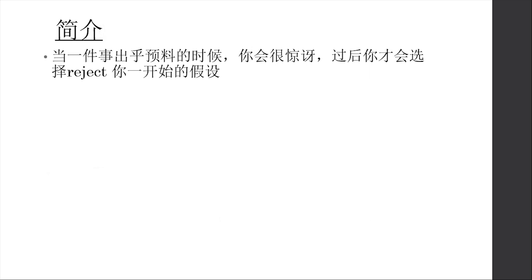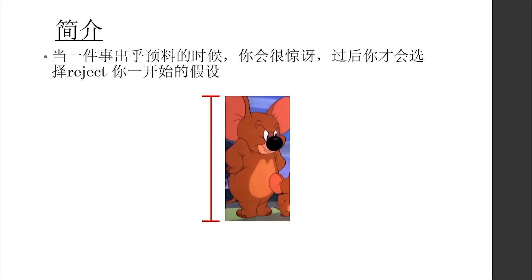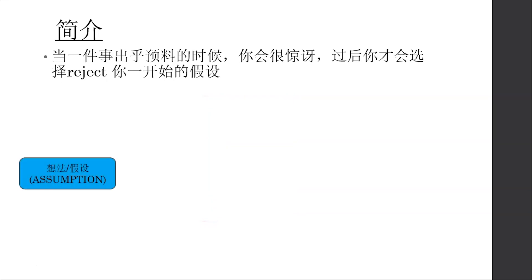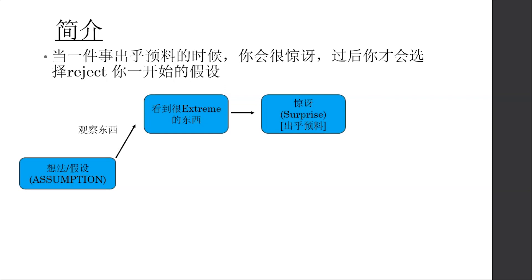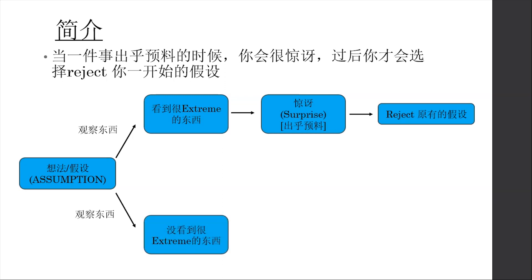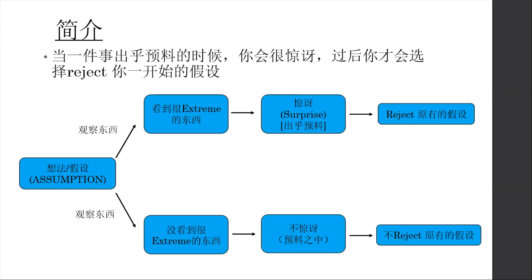We don't know what the truth is. Is the real size of mice actually similar to Jerry's size? There might really be mice that big, or maybe those big mice were just Dumbo in disguise. To summarize: first you have an idea, an assumption. Then you observe something. If you observe something very extreme and unexpected, you'll be very surprised, and you'll choose to reject your original assumption. If what you observe is within expectation and not extreme at all, you naturally won't reject your original assumption.